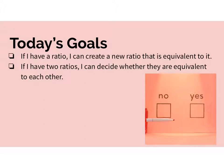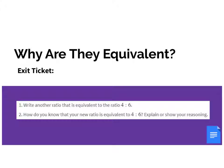Did you meet the goals? I can create a new ratio that is equivalent to it. Hopefully when you did the practice problems you were able to see you can do that. If you have two ratios, can you decide if they're equivalent or not?